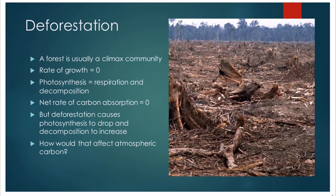Next, we have deforestation. We've discussed the reasons why it is done: forest resources such as timber, building materials, clearing land for agricultural use and food production for the human population, and clearing land to build homes for the expanding human population.